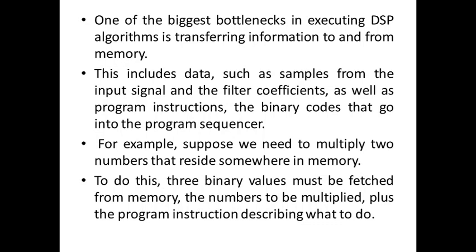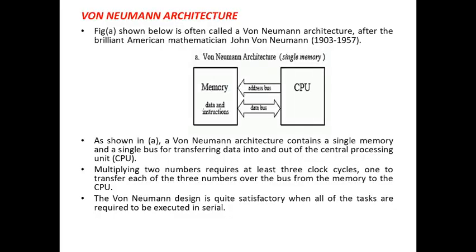Movement of data is very much crucial in a DSP processor architecture. Based on that, the conventional architecture which was first used was von Neumann architecture, named after the brilliant mathematician John von Neumann. In von Neumann architecture, it is evident that the CPU communicates with just one memory, which is used to store both data as well as instructions.